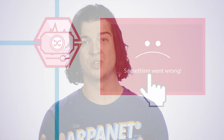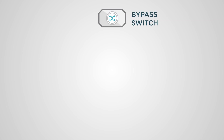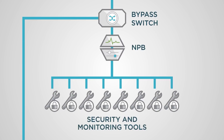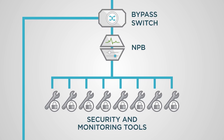Now, a better solution is to use an external bypass switch, which sits in front of your inline security tools. This enables you to separate control of the tool from control of your live network. With an external bypass, if you take an inline tool offline, the external bypass keeps traffic moving. This is particularly helpful when you need to proactively take the tool offline for troubleshooting or for things like upgrades.